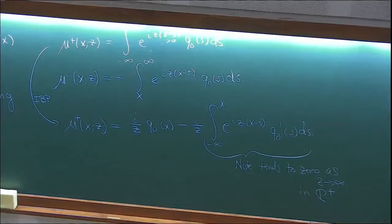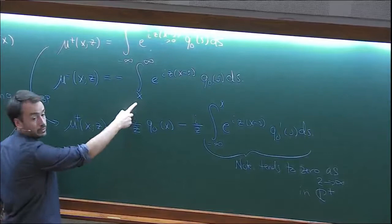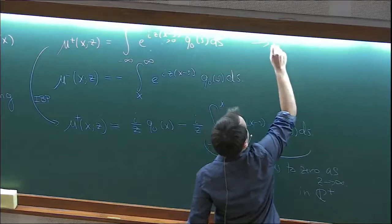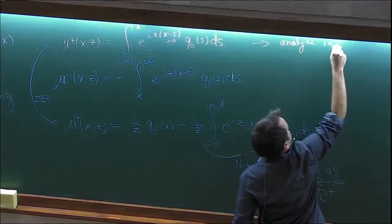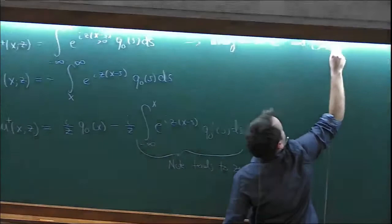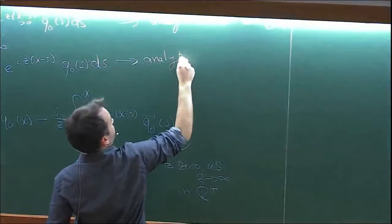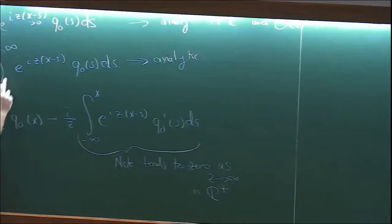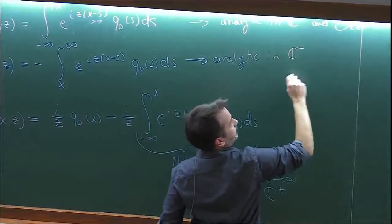A similar formula holds for mu minus. To summarize: mu plus is analytic in C-plus and order 1/z, while mu minus is analytic in the lower half plane and also order 1/z. For mu minus, the integrand has s always larger than x, so the opposite analyticity applies — analytic in the lower half plane.